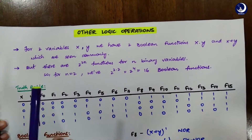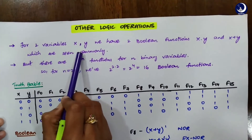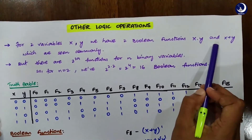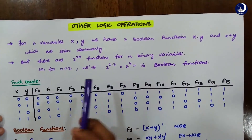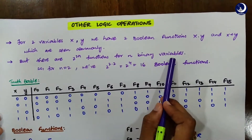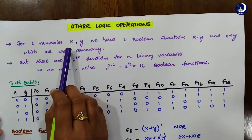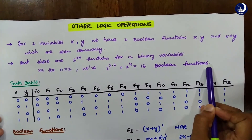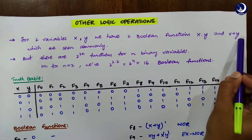First, we will look at other logic operations. Generally, for two variables x and y, we have seen two boolean functions: x·y and x+y, which are AND gate and OR gate. But in general, we have 2^(2n) functions for n binary variables. That means if we consider n to be 2, like only two variables x and y, we have 16 possible boolean functions, but we are only aware of these two.